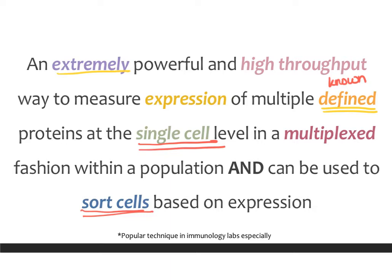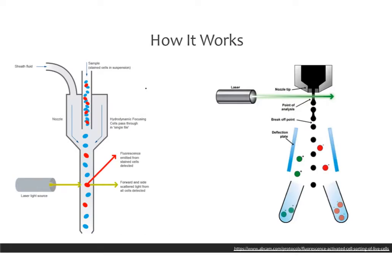Today we're just going to talk about the basics. A lot of this technique requires you to be trained on your own lab's machines or on your own core's machines. So we're just going to talk about the general concept. The way this works is that there are very expensive machines that allow you to run your sample through and — with a laser being pointed at the sample — generate a measure of fluorescence and also a measure of scatter, which is basically a measure of size based on how much light your particle scatters.